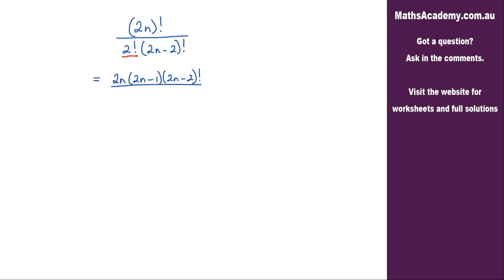This 2 factorial here is just simply 2 multiplied by 1 which is 2, and we've got the 2n minus 2 factorial. You should see that this 2n minus 2 factorial will cancel with this one here.